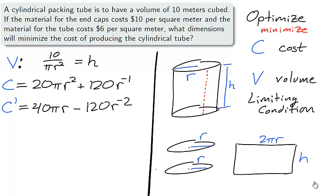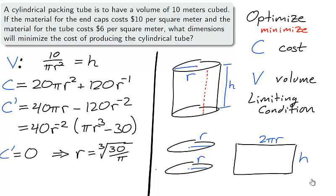To optimize, we begin by taking the first derivative. We simplify by factoring 40 and r to the negative 2, and we are left with πr³ minus 30. The radius cannot be 0, as the volume would be 0 and not 10, so the only critical number for c is found when the derivative is 0. r is equal to the cube root of 30 over π.